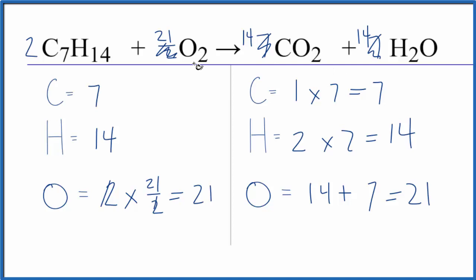These are the whole number coefficients for this equation. So the keys here: leave the oxygen till last. That's usually a good strategy with these combustion reactions. Then you can use a fraction if you need to to get your coefficients, and then you can double everything if you need whole numbers.